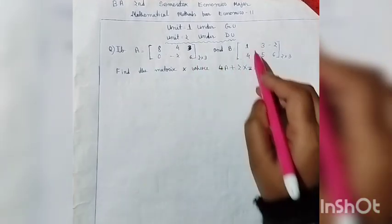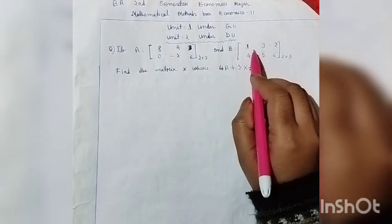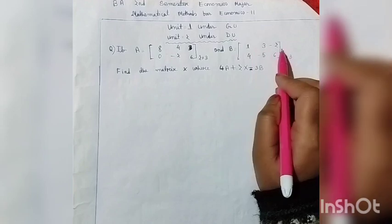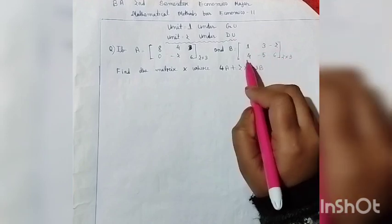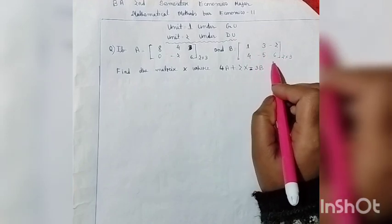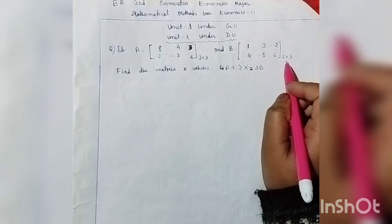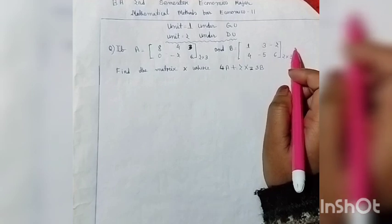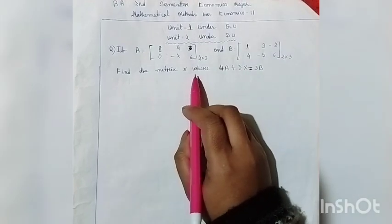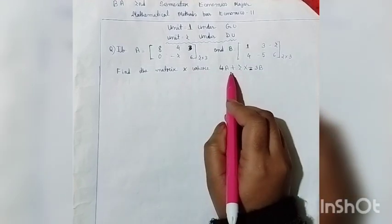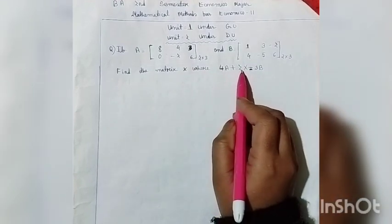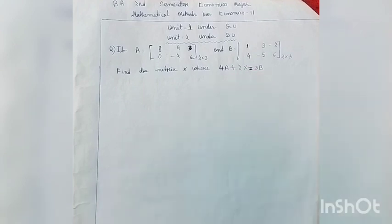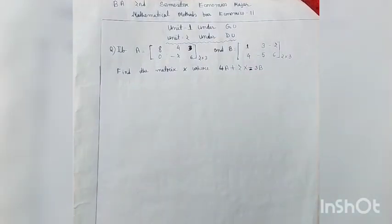And another matrix B with elements 1, 3, minus 2, 4, minus 5, and 6. This is also a 2 by 3 dimensional matrix. Find the matrix X where 4A plus twice X equals twice B.